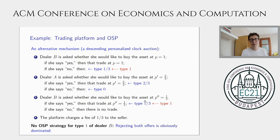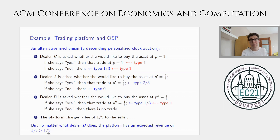Here comes the punchline. It actually doesn't matter what type one will do. Even though she's confused, it doesn't matter because no matter which of the two possibilities materializes, the platform always collects the fee of one-third. There is always trade no matter how type one behaves. Therefore the platform makes a profit of one-third — not only in expectation, but ex-post. This is obviously strictly better than the best the platform could do with a simple mechanism, which only gave a profit of one-fifth.